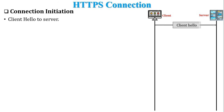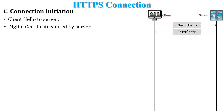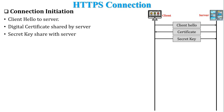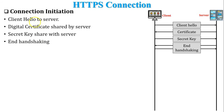The server receives and accepts the request and shares its digital certificate with the client. The client verifies that certificate with a certification authority. Once verified, the client generates a secret key and shares it with the server. Using the secret key, both client and server authenticate with each other and decide on the encryption algorithm and its parameters to be used during communication. The last message of this phase is the end of the handshake.